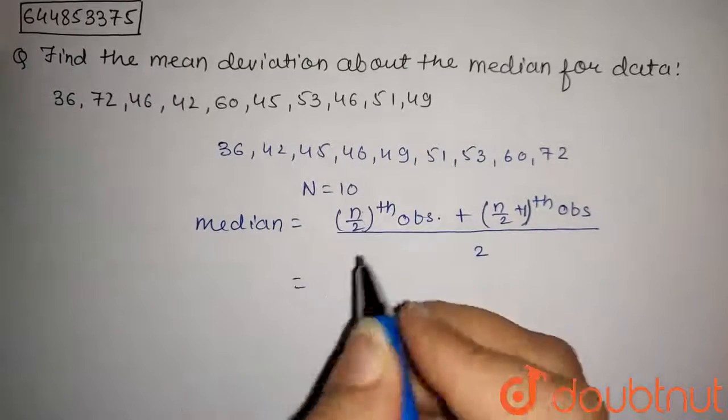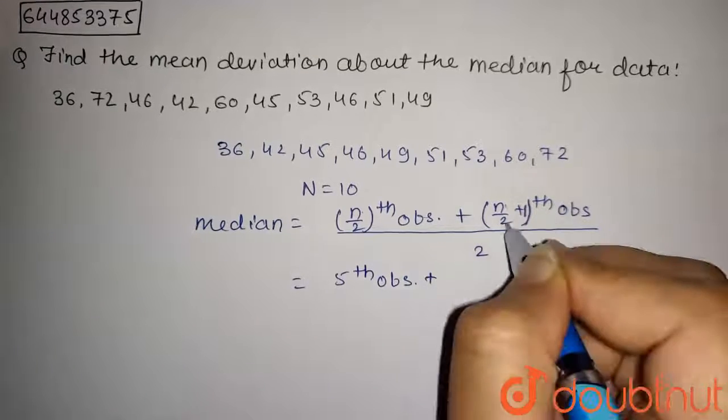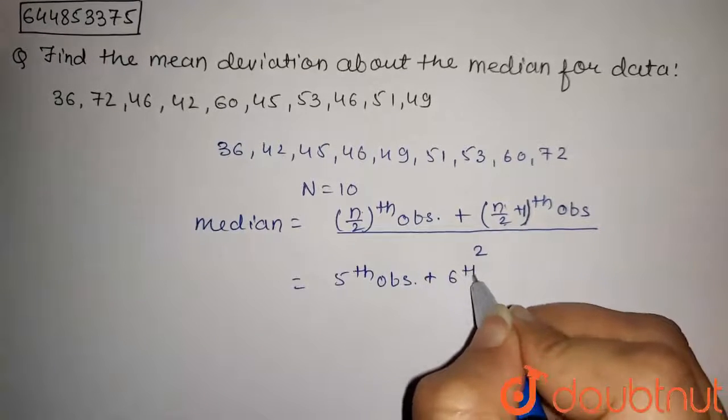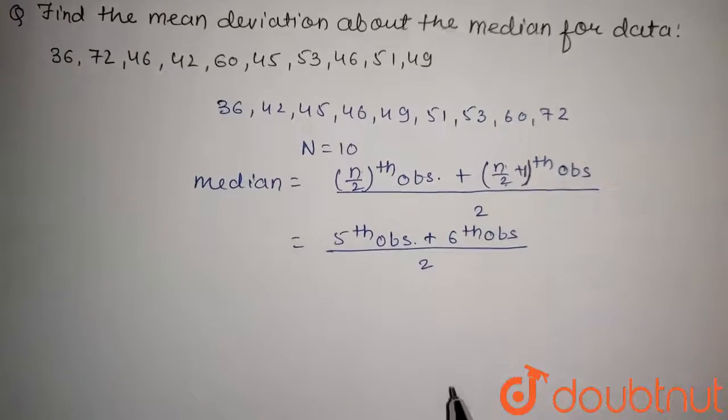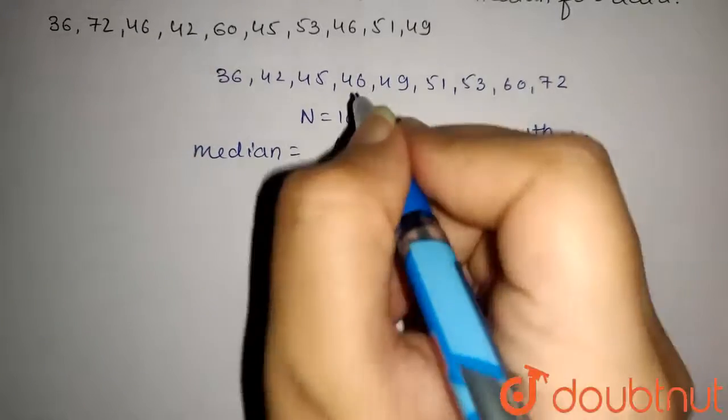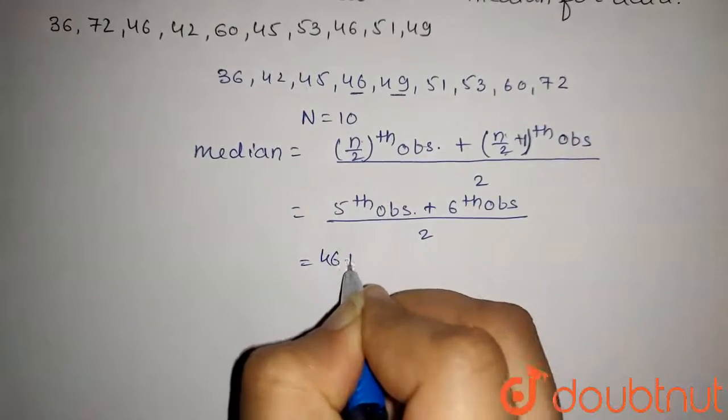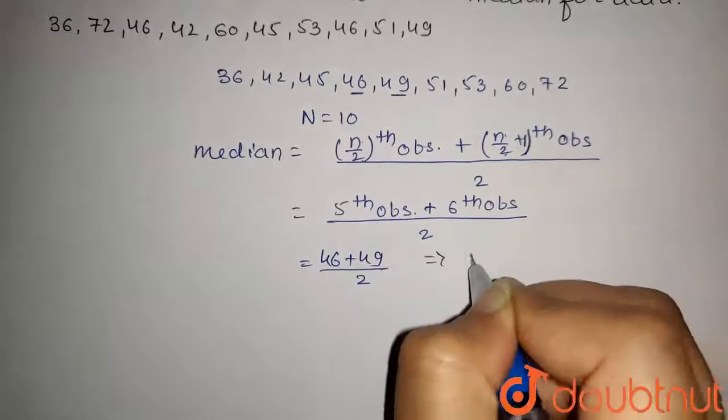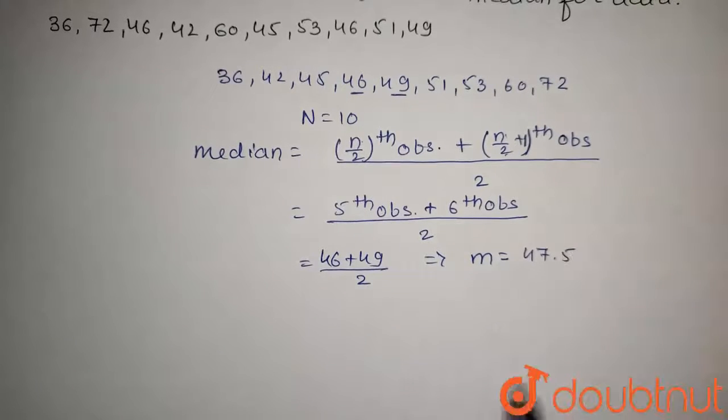This will be 10 by 2 that is 5th observation plus n by 2 plus 1 that is 6th observation upon 2. The 5th observation is 46 and 6th is 49. So it will be 46 plus 49 by 2 which gives median equal to 47.5.